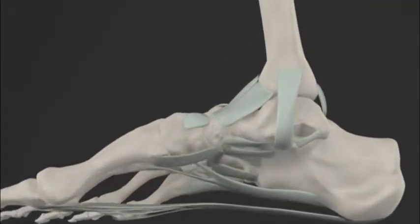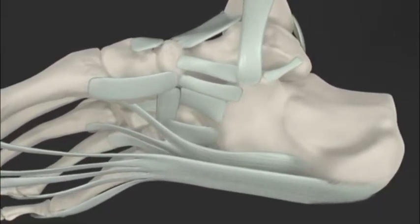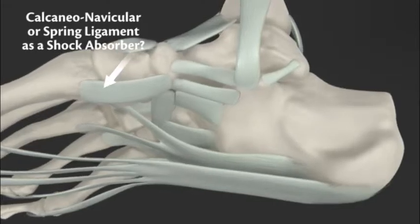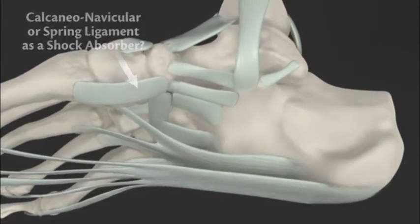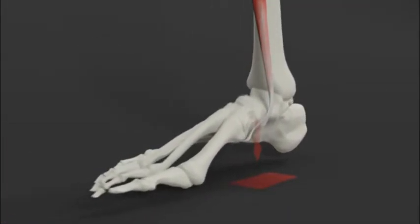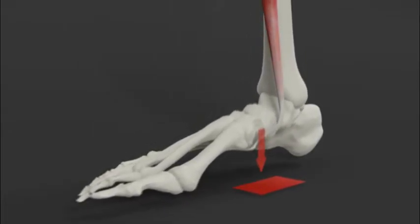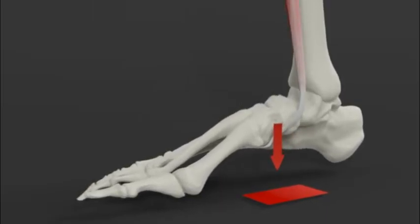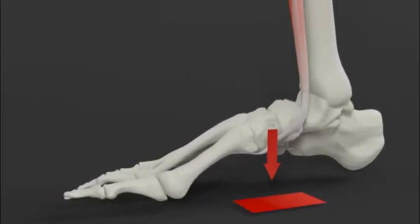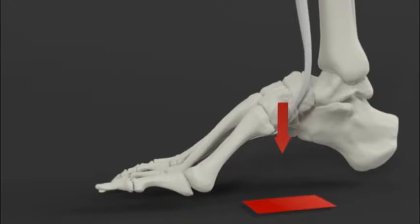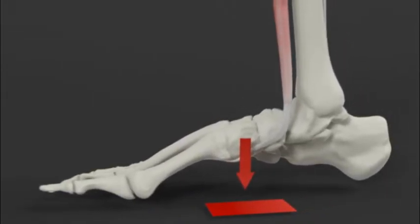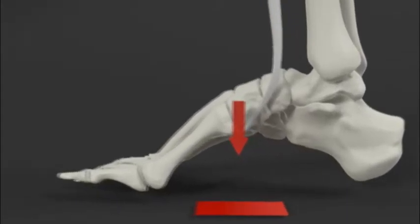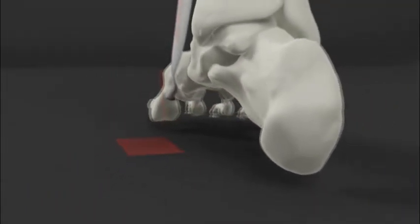It is often thought that the calcaneal navicular or spring ligament is a primary shock absorber in the foot. It certainly can be if the foot is allowed to collapse to the end of its postural range of motion. A far better shock absorptive strategy would be to decrease the velocity at which pronation is occurring. The tibialis anterior is perfectly situated to accomplish this.